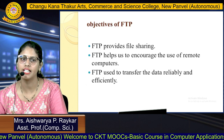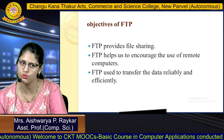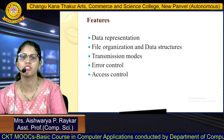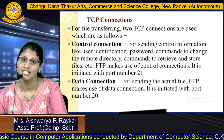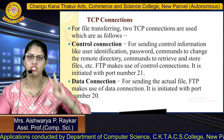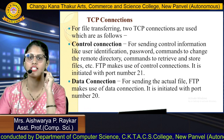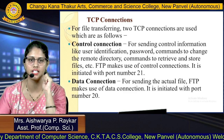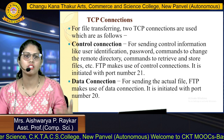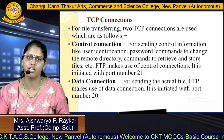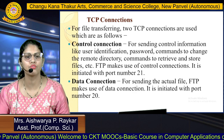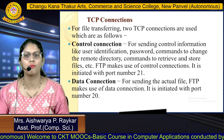The objectives of FTP include: file sharing, encouraging the use of remote computers, and transferring data reliably and efficiently. Features include: data representation, file organization, data structure, transmission mode, error control, and access control. For file transfer, TCP connections are used. There are two types: control connection (port 21) — used for sending control information like user ID, password, and commands to retrieve or store files — and data connection (port 20) — used for sending the actual file.